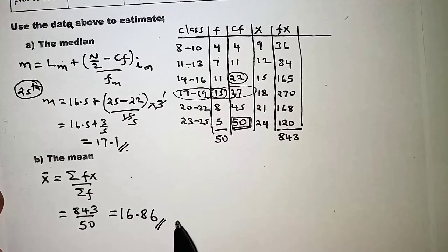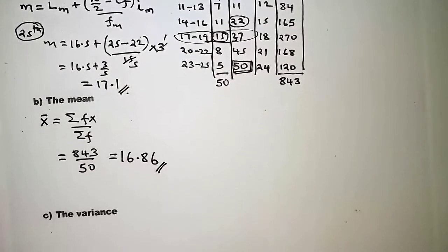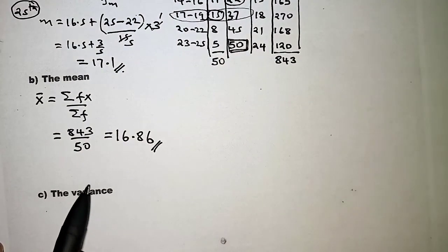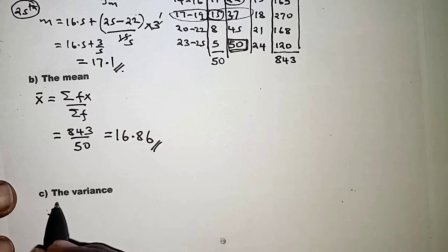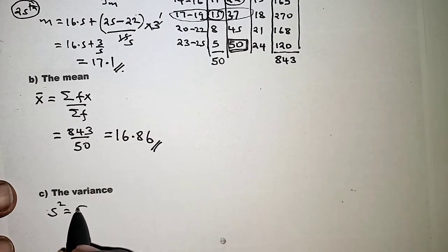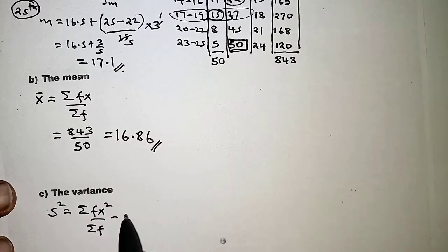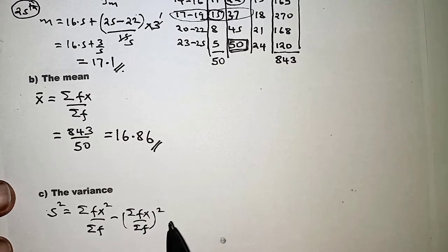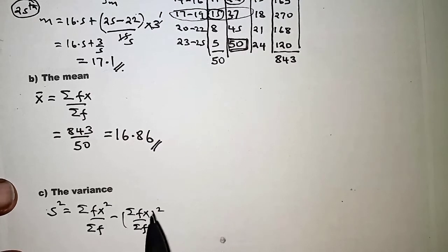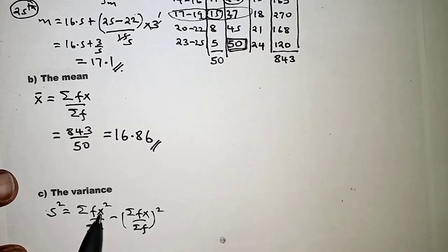For part (c) we calculate the variance. The formula is: variance s² = (Σfx²) / (Σf) − (Σfx / Σf)². What is still lacking in the table is a column for x² and a column for fx², so we need to add those.